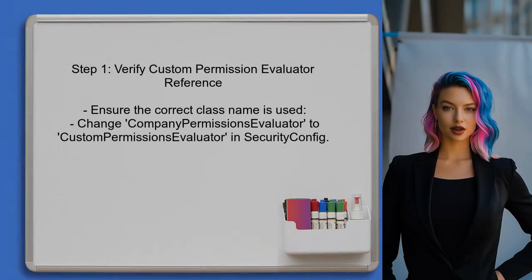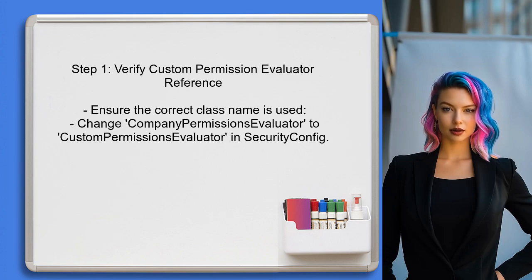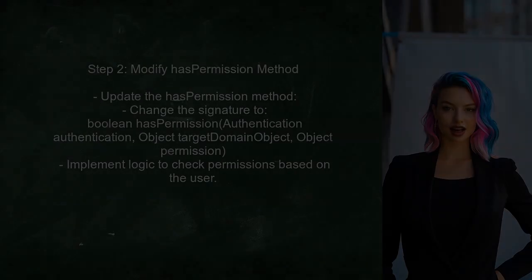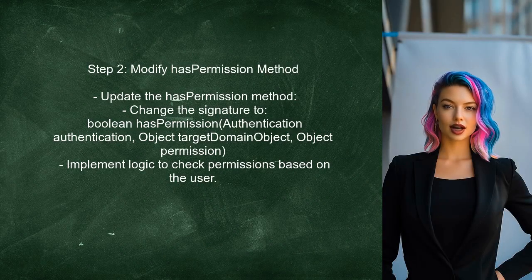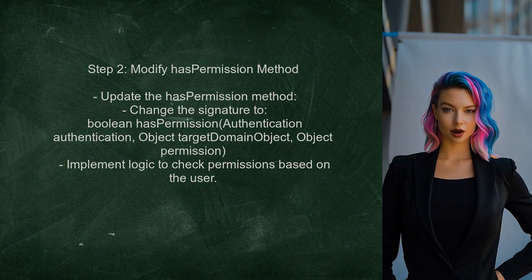To resolve the issue, the user should first ensure that the custom permission evaluator is correctly referenced in the security configuration. This means checking that the correct class name is used. Next, the user needs to modify the hasPermission method in the custom PermissionEvaluator. This method should accept the necessary parameters to match the expected signature.